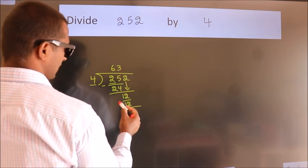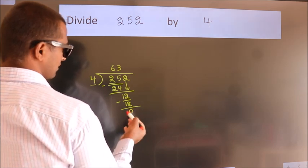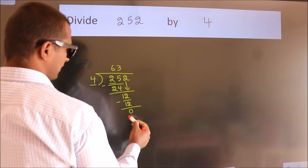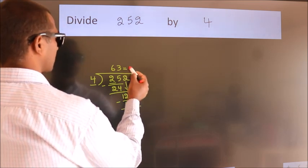Now we subtract. We get 0. After this, no more numbers to bring it down. And we got remainder 0. So this is our quotient.